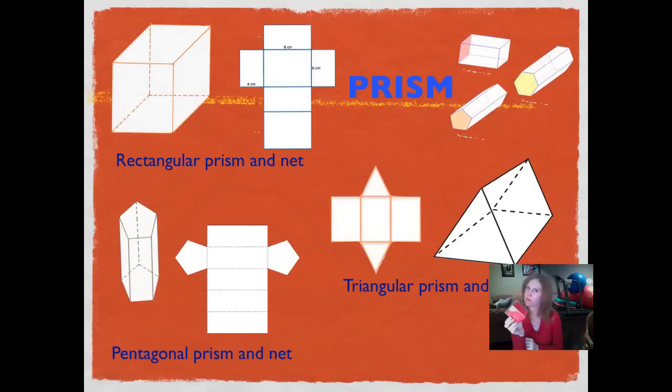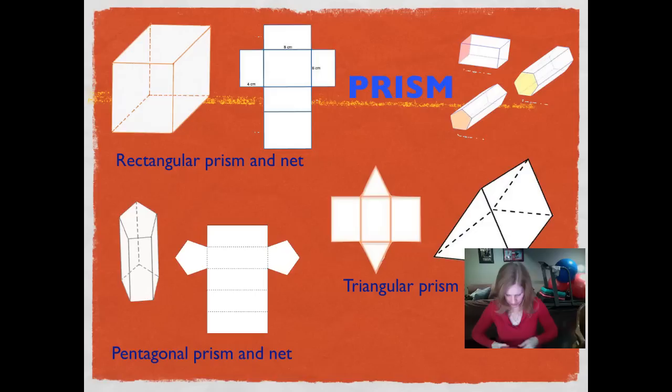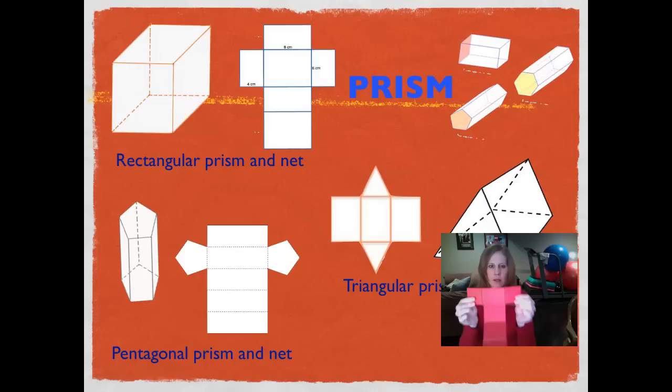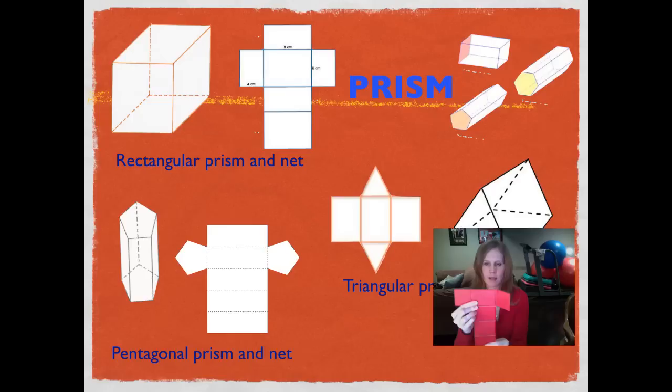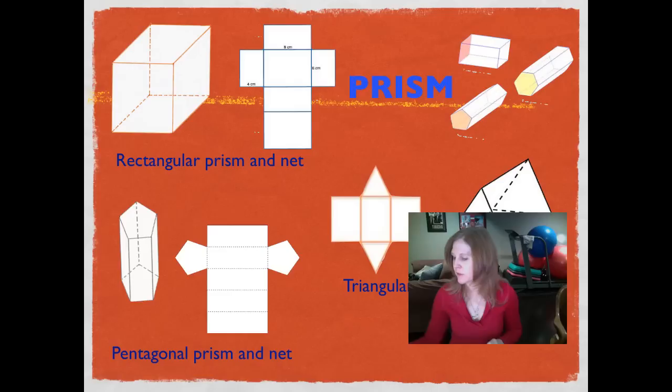How many vertices does a rectangular prism have? Let's count: one, two, three, four, five, six, seven, eight — eight vertices. When we open it up, it's going to be the same as a cube with flaps — four rectangular shapes going down, and then either rectangles or squares on the end. Those two end faces might be anywhere along that center part.